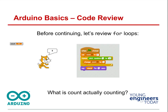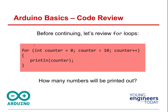Loops allow you to repeat a command over and over again. For example: for integer counter equals zero — this is a for loop — counter is less than 10, and counter increases by one, then print counter. This makes a variable called counter, initializes it at zero, and keeps the loop going around until counter reaches 10. It must be less than 10. Every time it goes around, counter gets one added to it. You could use counter plus plus, make it minus, minus minus, or plus two to go up by two every other time.